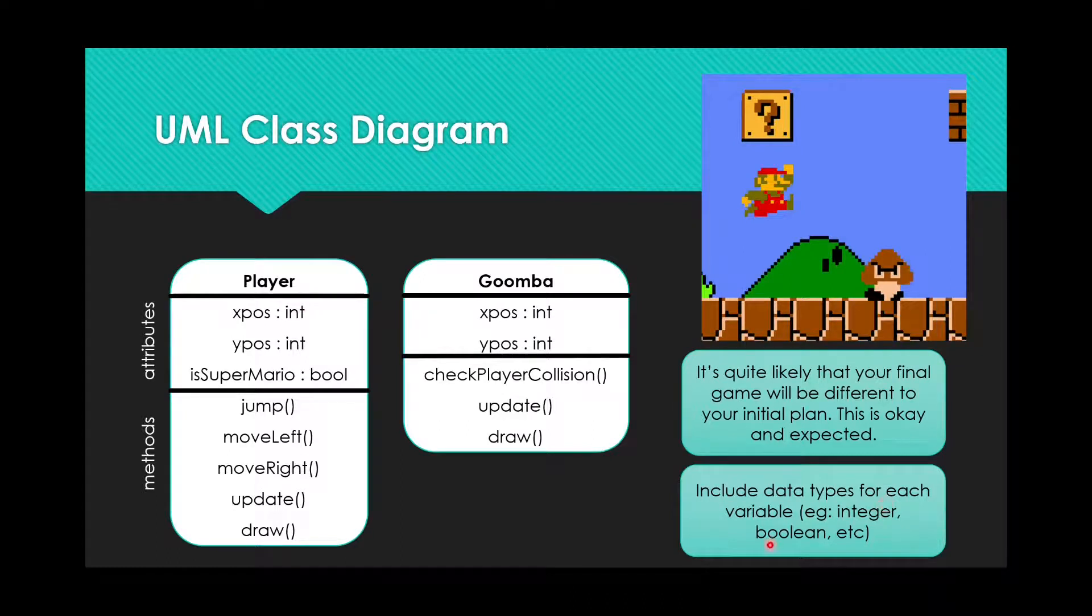For example, an integer or a boolean. There will be lots of other information to store as well. Like maybe its horizontal speed and its vertical speed, whether it's jumping or not. But I'm just keeping this diagram simple.